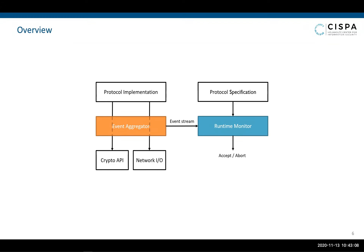The foundation of our approach is rooted in the fact that the security of a protocol execution depends only on the messages exchanged over the network and their content. Moreover, protocol implementations are typically implemented on top of libraries that provide cryptographic operations and network I/O. This makes it possible to enforce security in a lightweight, black-box fashion. Our approach consists of two main components, the Event Aggregator and the Runtime Monitor. The Event Aggregator observes function calls to the cryptographic libraries and network interfaces during the execution of the protocol. This information provides an event stream of cryptographic operations and network communication, which is fed into the Runtime Monitor. This monitor is automatically synthesized from the protocol specification and verifies that each event is allowed in the current state according to the specification. In this way, the monitor can detect when the execution is about to deviate and abort the execution.